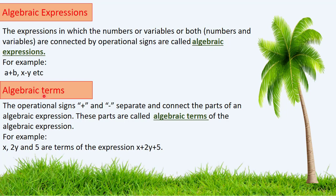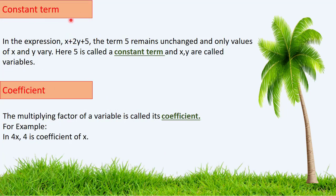Algebraic terms: the operational signs plus and minus separate and connect the parts of an algebraic expression. These parts are called algebraic terms. For example, in the expression x + 2y + 5, the algebraic terms are x, 2y, and 5.